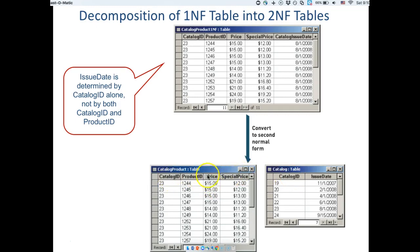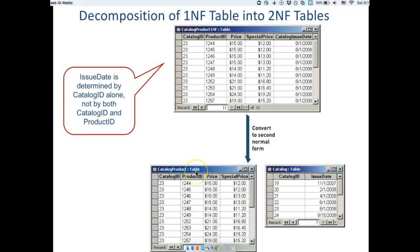The fix is: take the catalogue issue date out and put it in a separate table with catalogue ID — the part of the primary key it depends on. Then take the price out and put it in a separate table with product ID. The only attribute that stays in the original table is the special price, because it depends on the entire primary key — the combination of catalogue ID and product ID.